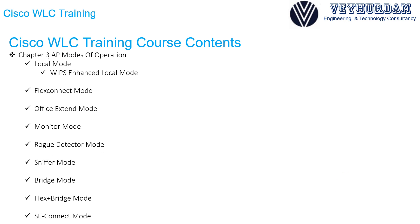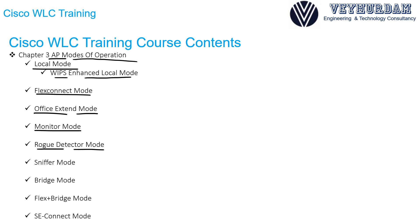In chapter 3 we will go over different access point modes of operation: local mode, FlexConnect mode, how FlexConnect works, office extend mode, monitor mode, rogue detector mode, sniffer mode, and bridge mode. We will also understand FlexConnect plus bridge mode, which is the combination of FlexConnect mode and bridge mode. Then we will understand SE-Connect mode and what makes it different from the other modes. We will do a lab on how to configure and choose different modes of operation.